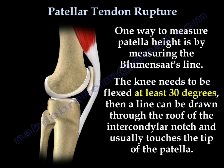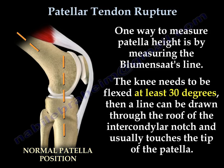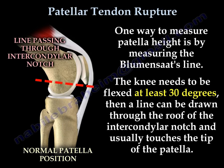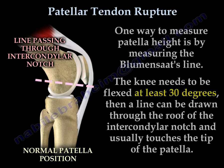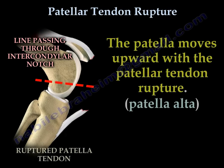To know if the patella is high, low, or normal, we usually use Blumensaat's line as a guide. The knee will be flexed about 30 degrees, then a line can be drawn through the roof of the intercondylar notch. Usually it touches the tip of the patella. The patella moves upward with patellar tendon rupture — we call this patella alta.